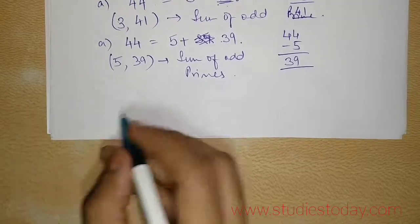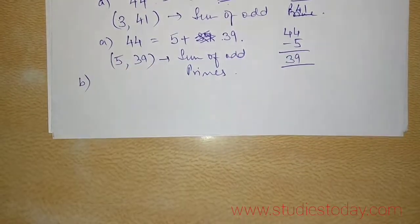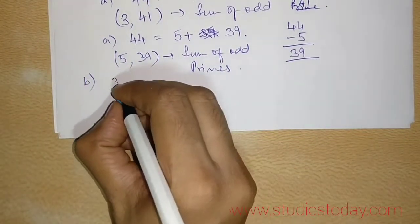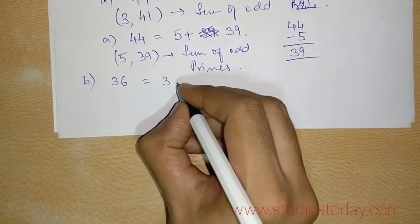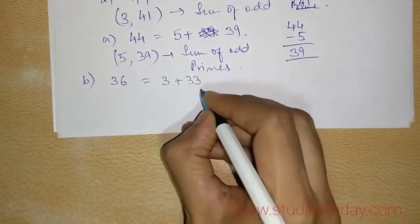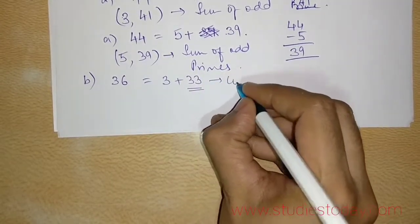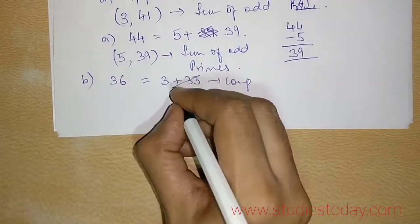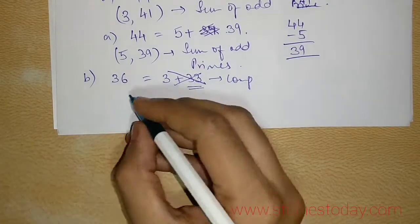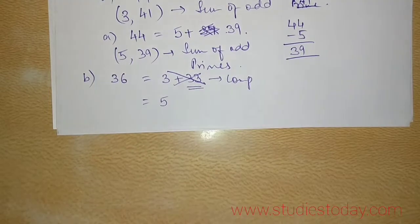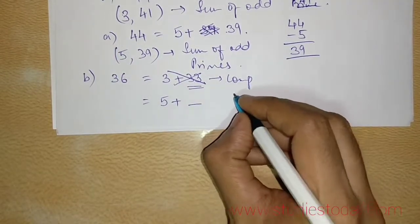Now we take up another question, which is the B part, which says 36. Now you express 36 can be written as first number is 3 plus 33. Now, 33 is composite. That means I cannot take the set. I have to move on to the next prime number. Now I choose 5.